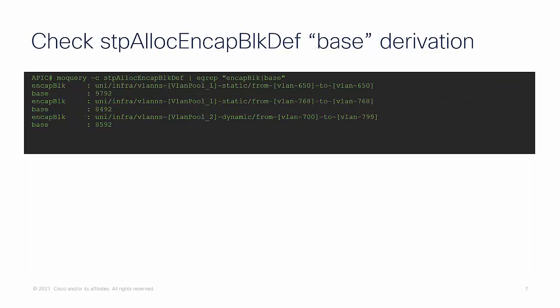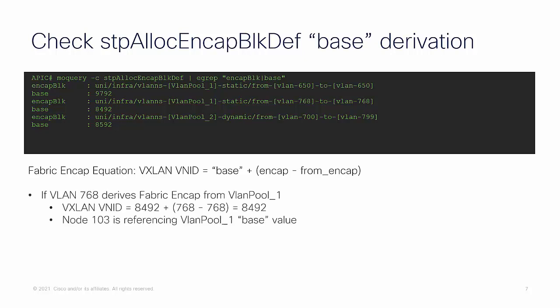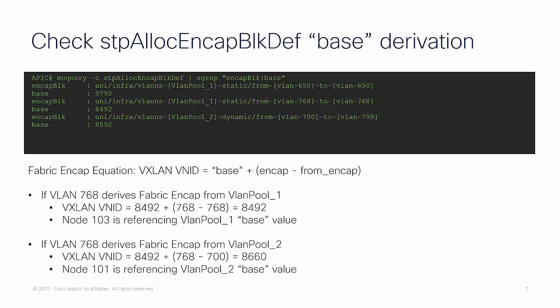Now that we have identified overlaps and mismatches, we can validate which object is being referenced for the mismatch VNIDs using a MoQuery against it. The Fabric NCAP equation is the base value of this object plus the defined NCAP minus the from NCAP. Using example VLAN 768 and referencing the MoQuery output: if VLAN 768 derives its VXLAN from VLAN pool 1, the resulting VNID will be 8492. If VLAN 768 derives its base value from VLAN pool 2, the resulting VNID is 8660.